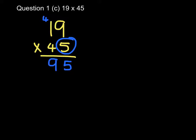Then I'm going to multiply the 19 by the 40. So the first thing I do is put down my 0. 4 times 9 is 36, put down my 6, carry my 3. 4 times 1 is 4, add 3, 7.